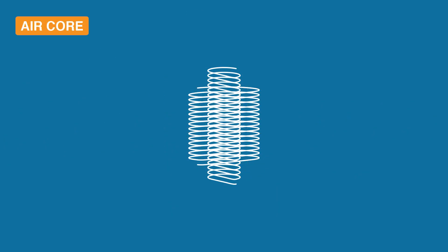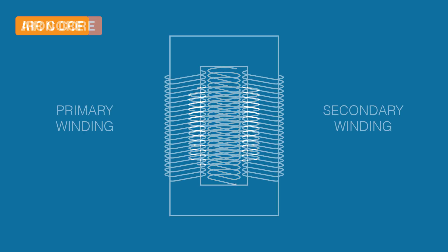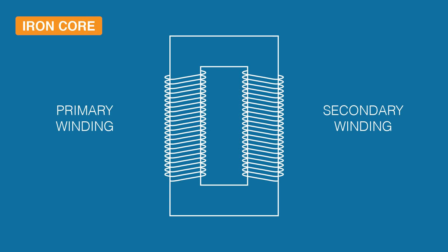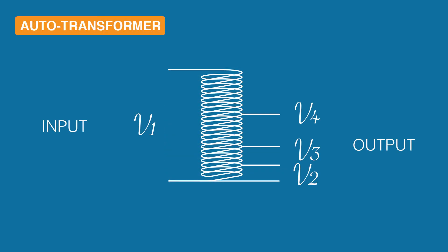Air core transformer where both the primary and secondary windings are wound on a multiple iron plate bunch. Autotransformer where one single winding is used as primary winding as well as secondary winding.